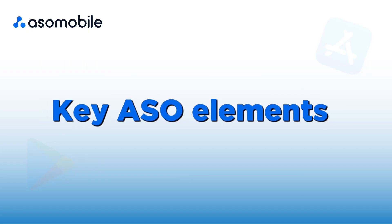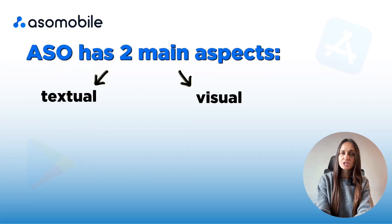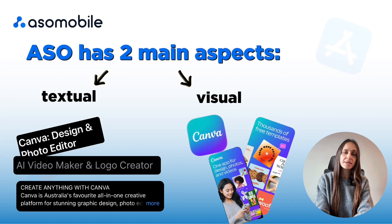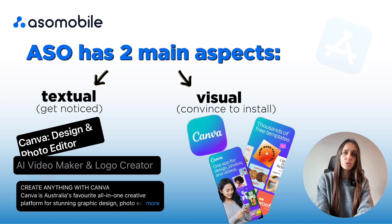Key ASO elements: ASO has two main aspects — textual and visual. Those are what make your ASO strategy successful. Texts help you get noticed, while visual elements convince users to install. If you miss even one of them, your ASO simply won't work as effectively as it could.